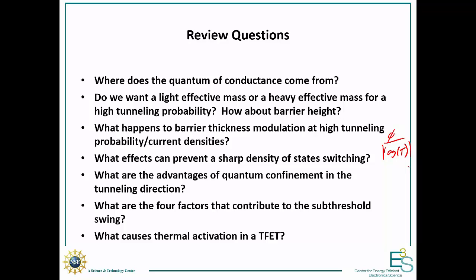What are the four factors that contribute to the subthreshold swing? Two are gate efficiencies: the electrostatic gate efficiency, which means you lose some voltage across your gate oxide; and the quantum confinement gate efficiency, where in devices with very narrow channels a quantum confined level shifts as you pull the voltage down, fighting against you. The other two factors are barrier thickness modulation and density of states switching — whichever is steeper gives the steeper turn-on. Finally, what causes thermal activation in the tunnel FET? It appears to be a two-step process of tunneling into a band-tail or defect state and then being thermally excited out. If the tunneling rate is very high, you become limited by the thermal excitation rate and see thermal activation.